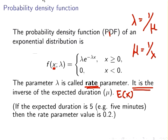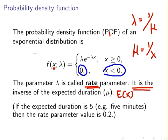We cannot have a negative time period — you can't wait less than zero seconds. That is why if we have a negative time period, the probability is zero because that is an impossible event. So the relevant part of the PDF is lambda times e to the power of minus lambda X for X greater than or equal to zero.